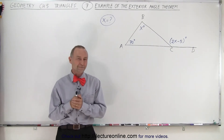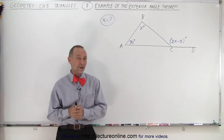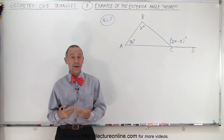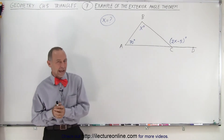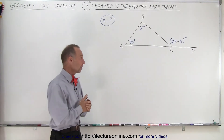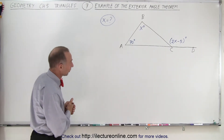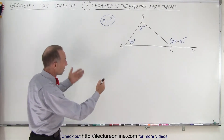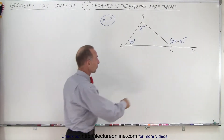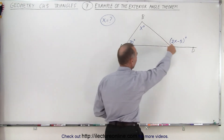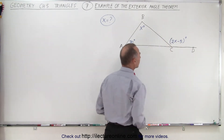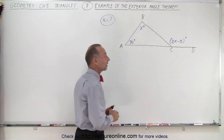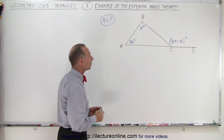Welcome to Electronline. Now let's try a numerical example of the exterior angle theorem for triangles. Here we have a triangle, and notice we have an exterior angle right here which is denoted by 2x minus 5 degrees.